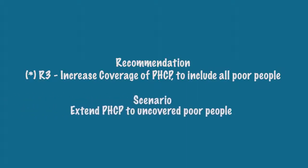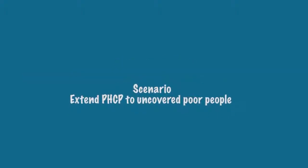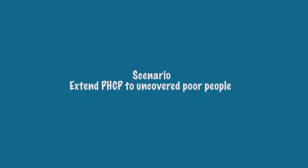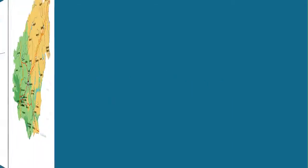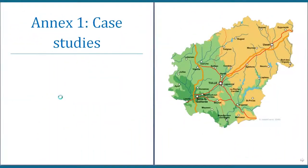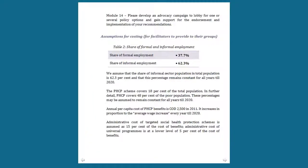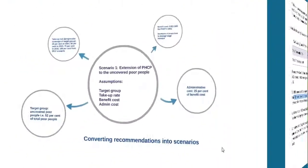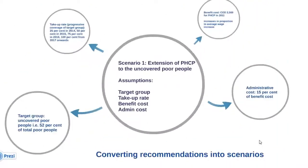This can be converted into a practical scenario to extend PHCP to uncovered poor people. From this scenario, we then need to draft specific parameters to allow for more accurate costing. Some of these parameters can be found within the Assumptions for Costing in the Croatia case study. Let's now list the parameters for this recommendation.